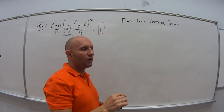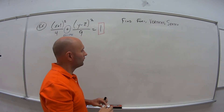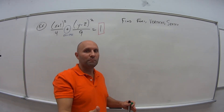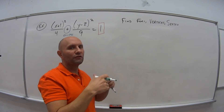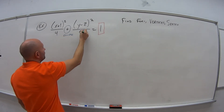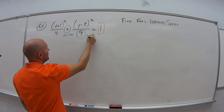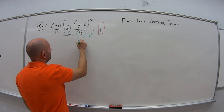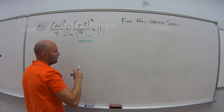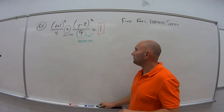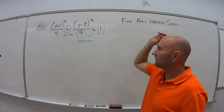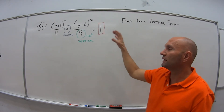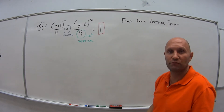Now that I know it's an ellipse, I want to know: is it vertical or is it horizontal? With the ellipse, whichever is the bigger number, that's my a squared. So 9 is my a squared. Because the 9 is under the y term, that tells me this is vertical. From a partial credit standpoint, even if you do nothing else, if you at least identify this as a vertical ellipse, you'll get some credit.